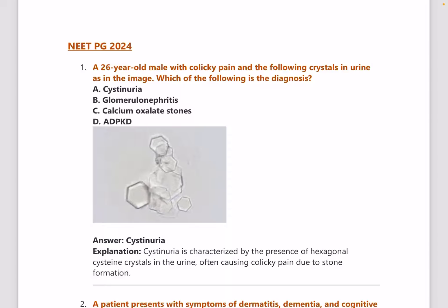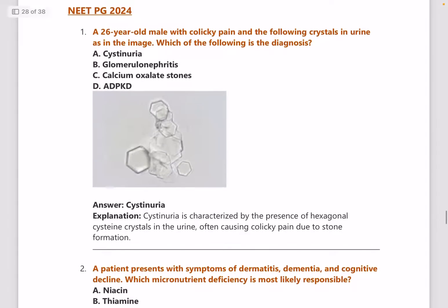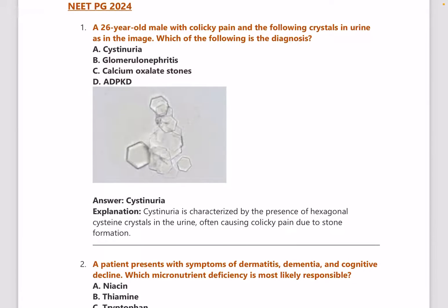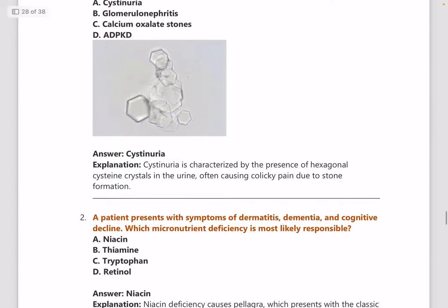A 26-year-old male with colicky pain and hexagonal crystals in urine — which of the following is the diagnosis? Answer is cystinuria. Cystinuria is characterized by the presence of hexagonal cystine crystals in the urine, often causing colicky pain due to stone formation.